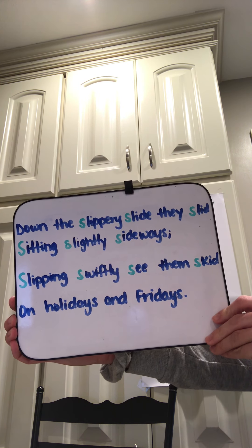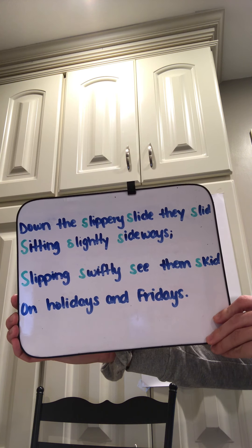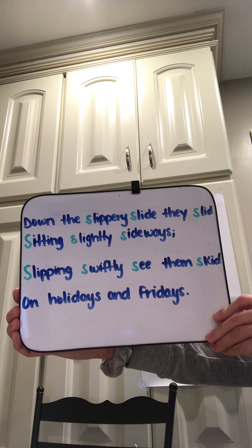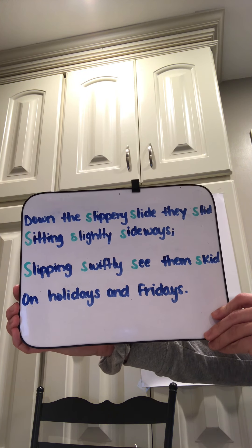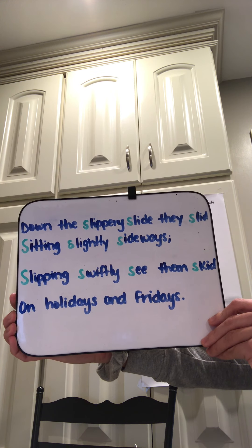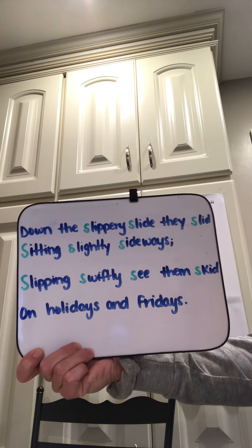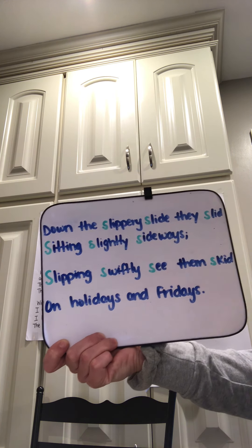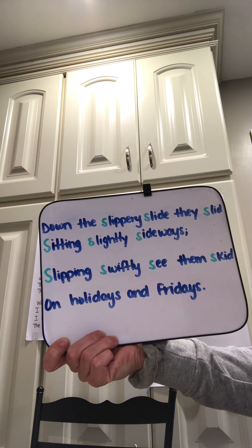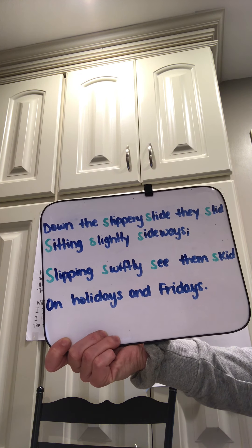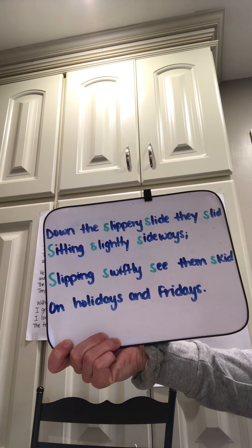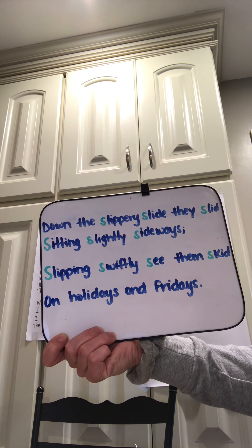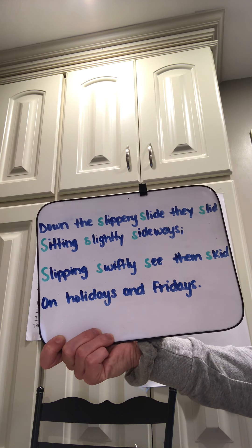Down the slippery slide they slid, sitting slightly sideways, slipping swiftly, see them skid on holidays and Fridays. So the alliteration that we hear — the consonant sound being repeated again and again — is the letter S, the sss sound. We hear it in slippery, slide, slid, sitting, slightly, sideways. The author could have used many different words to get his point across, but he wanted to use words that had the same sounds to create that alliteration.